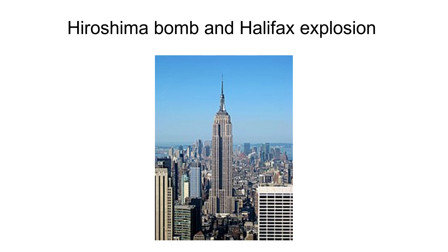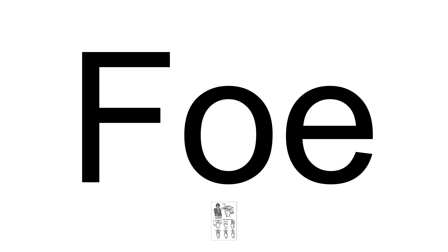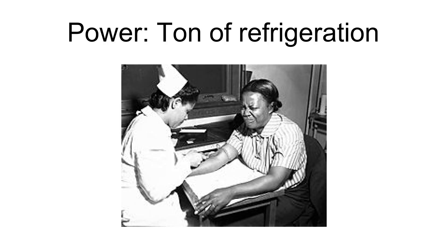A FOE is a unit of energy equal to 10⁴⁴ joules, 9.478 × 10⁴⁰ BTU, that was coined by physicist Jerry Brown of Stony Brook University. To measure the staggeringly immense amount of energy produced by a supernova, specialists occasionally use the FOE, an acronym derived from the phrase '10 to the power of 51 ergs,' or 10⁵¹ ergs. This unit of measure is convenient because a supernova typically releases about one FOE of observable energy in a very short period of time. The rate at which heat is removed by melting one short ton, 910 kg, of ice over 24 hours is referred to as a ton of refrigeration, or sometimes a ton of cooling. One ton of refrigeration is equal to 12,000 BTU/h exactly, or 3.517 kilowatts.